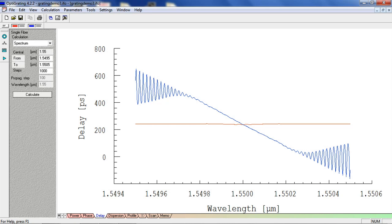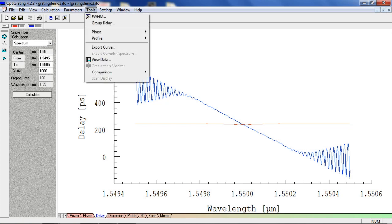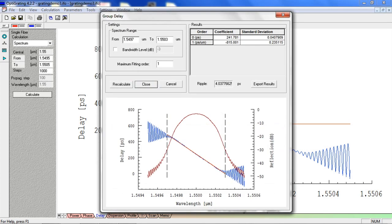There is a longer delay for the shorter wavelengths of about 400 picoseconds than there is for longer wavelengths. If we go to Tools, then Group Delay, we can adjust the spectrum range. In this example, the spectrum range is adjusted to 1.5497 to 1.5503.